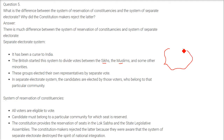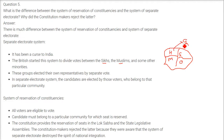In a separate electorate system, a constituency is divided into groups — Hindu, Muslim, Sikh, others. If the candidate is Hindu, only Hindus can vote; if Sikh, only Sikhs can vote; only Muslims can vote for a Muslim candidate. The candidates are elected only by voters who belong to that particular community — a Muslim cannot vote for a Hindu candidate.